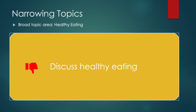Here's an example. The broad topic area is healthy eating, and after thinking about it for a minute, you decide your question is: discuss healthy eating. The good part of the question is that you have a function word — discuss. But other than that, there's no narrowing. You cannot just have an essay question such as 'discuss healthy eating.' You need to narrow the question down much more.